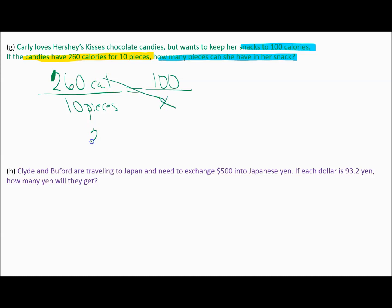So now it's time to cross multiply. 260x equals 100 times 10. So I have 260x equals 1000. And then I divide both sides by 260. So x equals 1000 divided by 260. So x equals 3.846 and it just keeps going. It doesn't say anything about rounding. But let's read the problem. What did we just find out? How many pieces can she have in her snack? Now, you can't have 3.8 Hershey Kisses. So the question is, do we round this up to four or do we round it down to three Hershey Kisses?